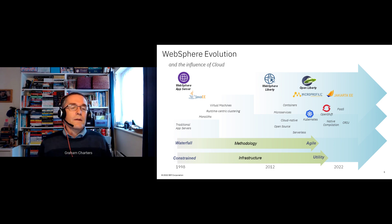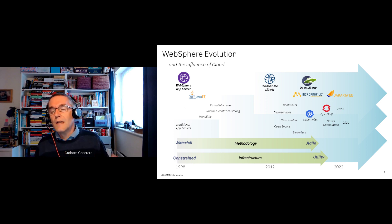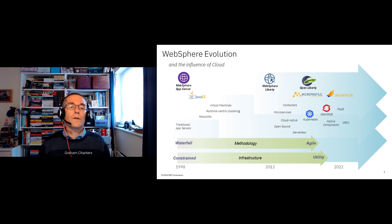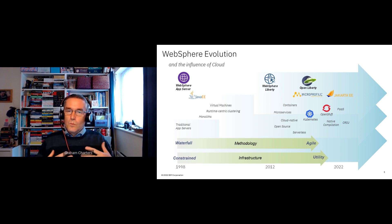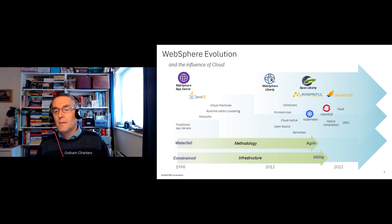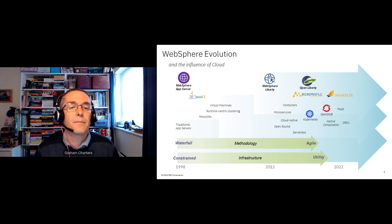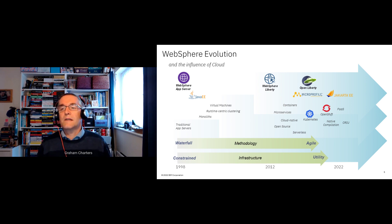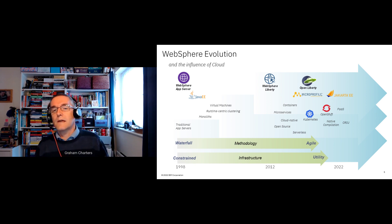I want to talk about the evolution of the WebSphere portfolio and our application runtimes to help position the relationship between traditional WebSphere, WebSphere Liberty, and Open Liberty — and understand how Liberty is a very different runtime uniquely tailored for cloud-native applications. We've had WebSphere Application Server for many years — coming up for 25 years — starting as an implementation of what became the Java EE specifications.